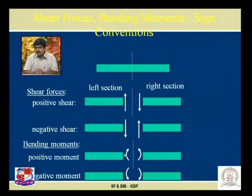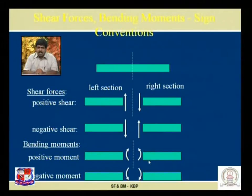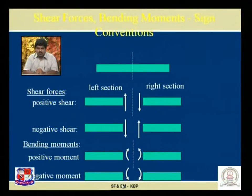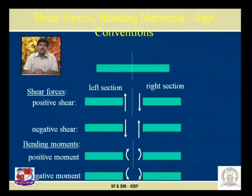For bending moment, section left clockwise or section right anti-clockwise — this nature is known as sagging bending moment, which is treated as positive bending moment. Opposite to that, section left anti-clockwise or section right clockwise generates the hogging bending moment, treated as negative bending moment in this series of shear force and bending moment.